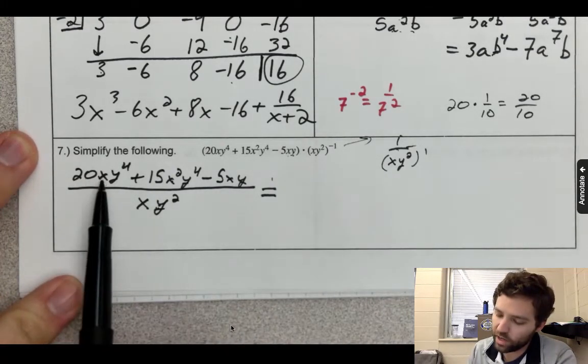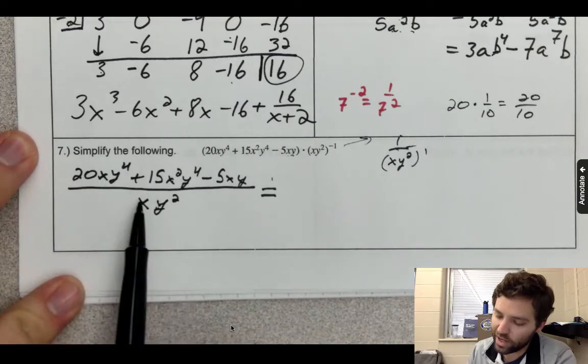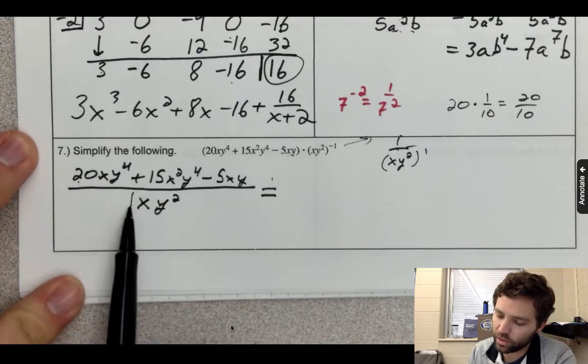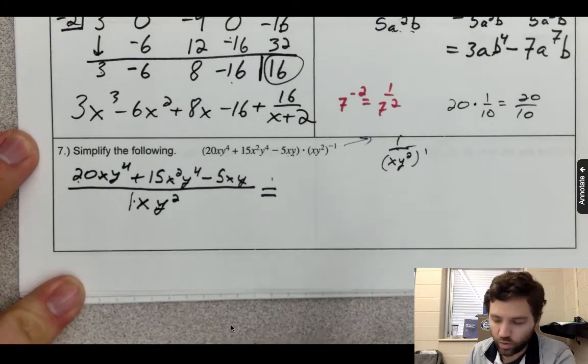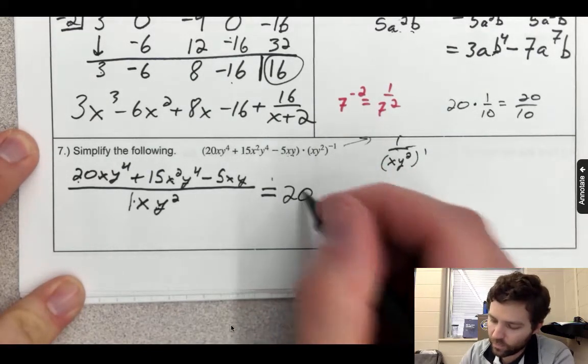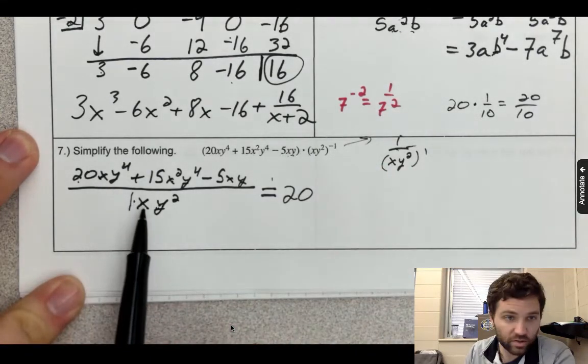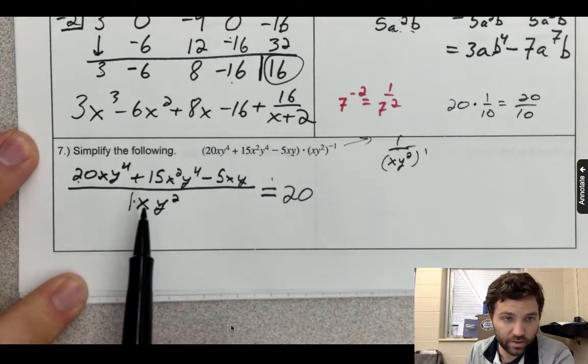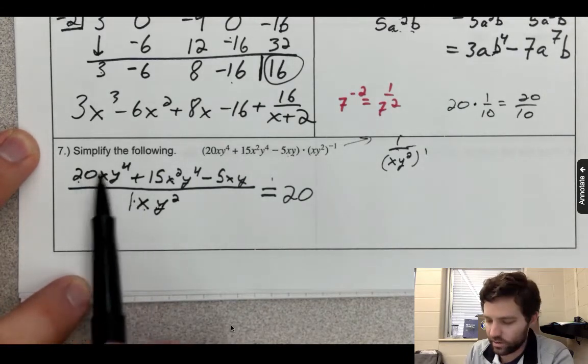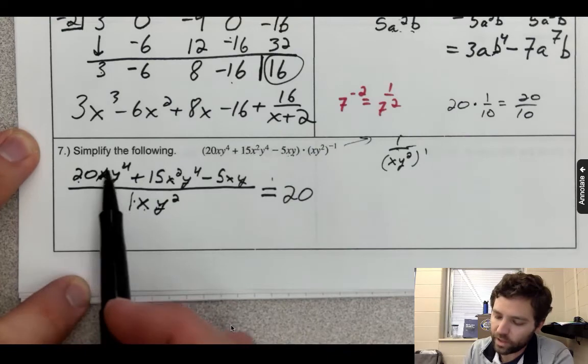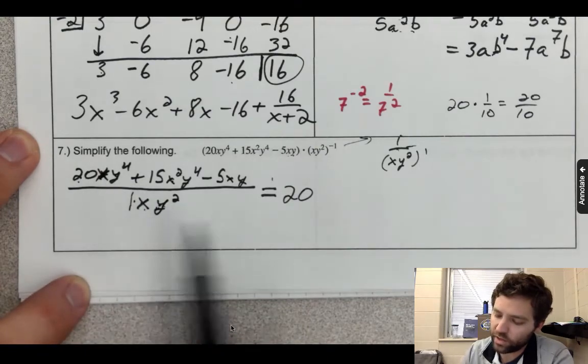So 20xy⁴ over xy². 20 over 1, that's just 20. x over x, those essentially cancel out. And then y⁴ over y² leaves you with y². So that's 20y².